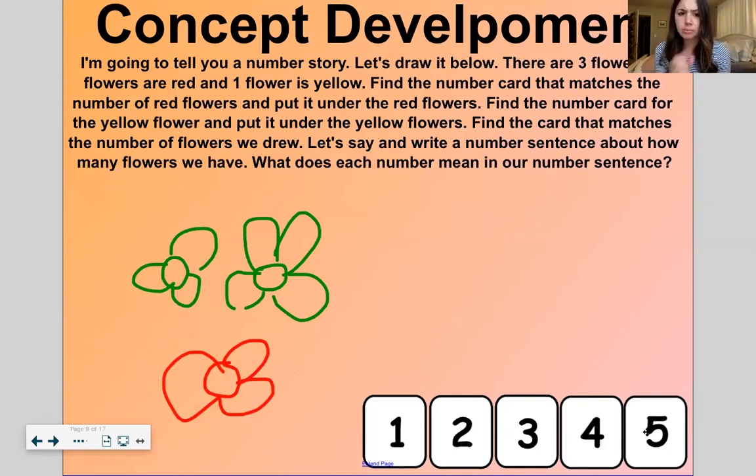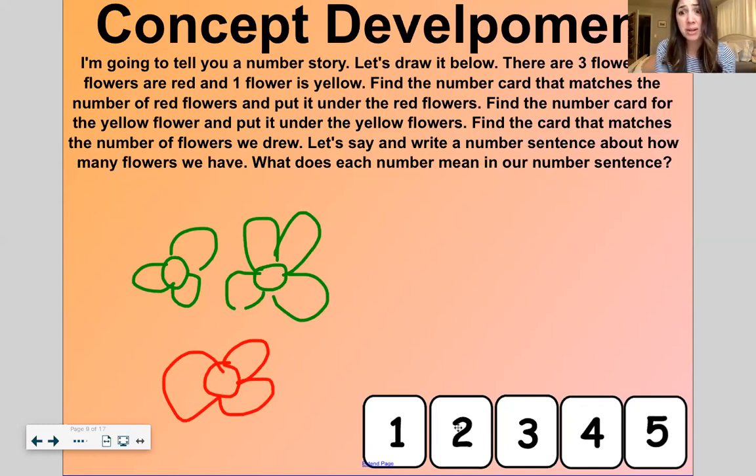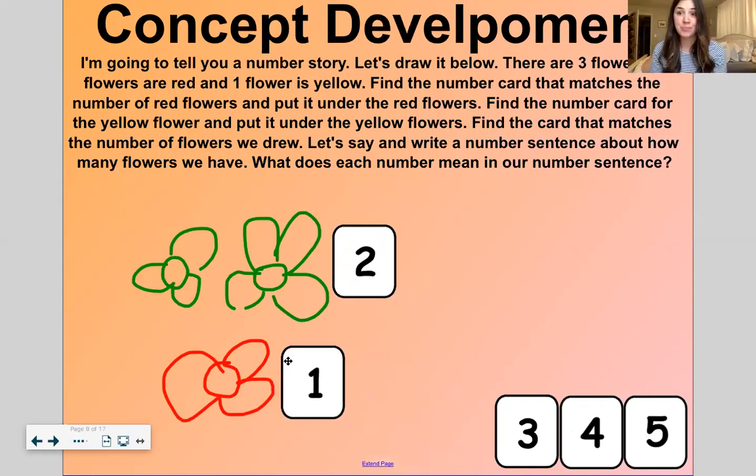I see these number cards down below. What do you think we should do with these number cards? I think maybe we should drag them and match them up with the quantities of the flowers. So there are two green flowers. So I'm going to get this 2 and put it right here. And there's one red flower. So I'm going to get this 1 and put it right here.